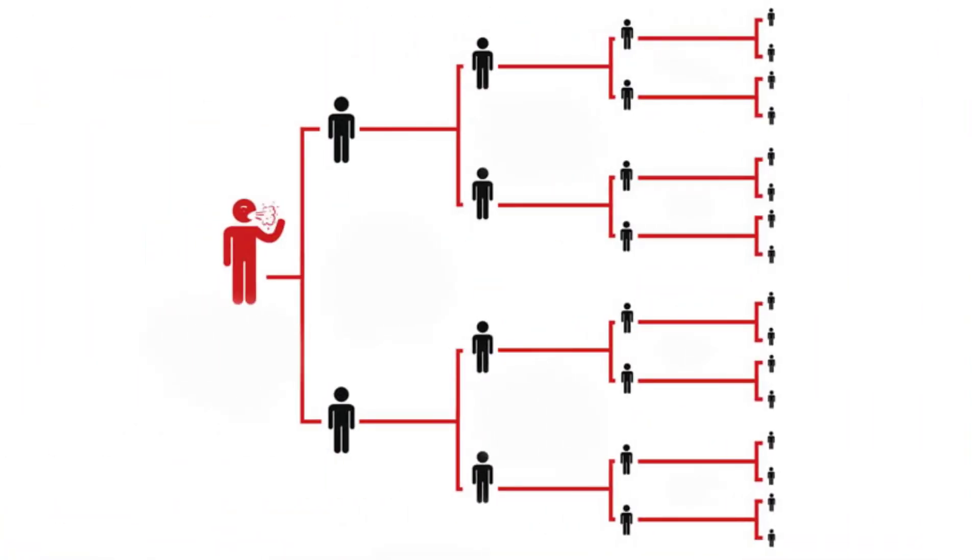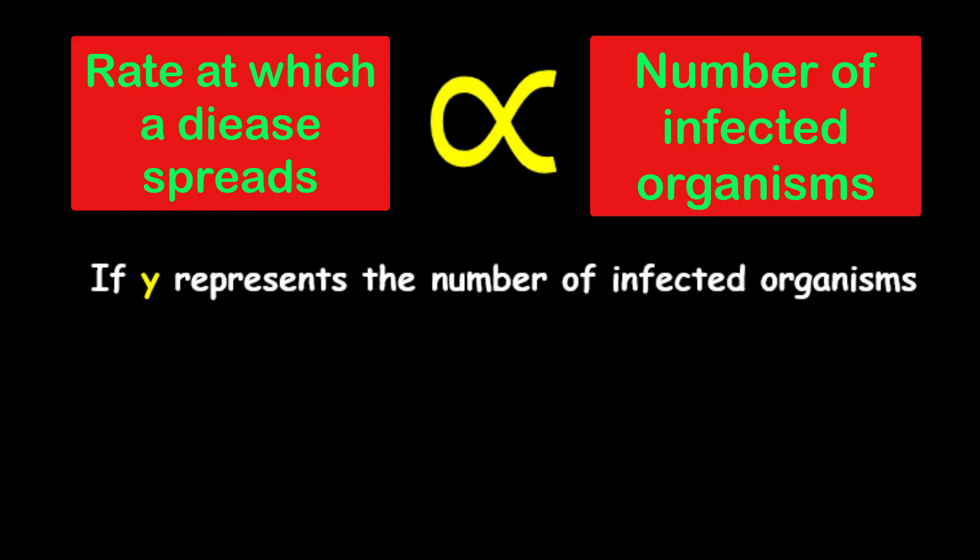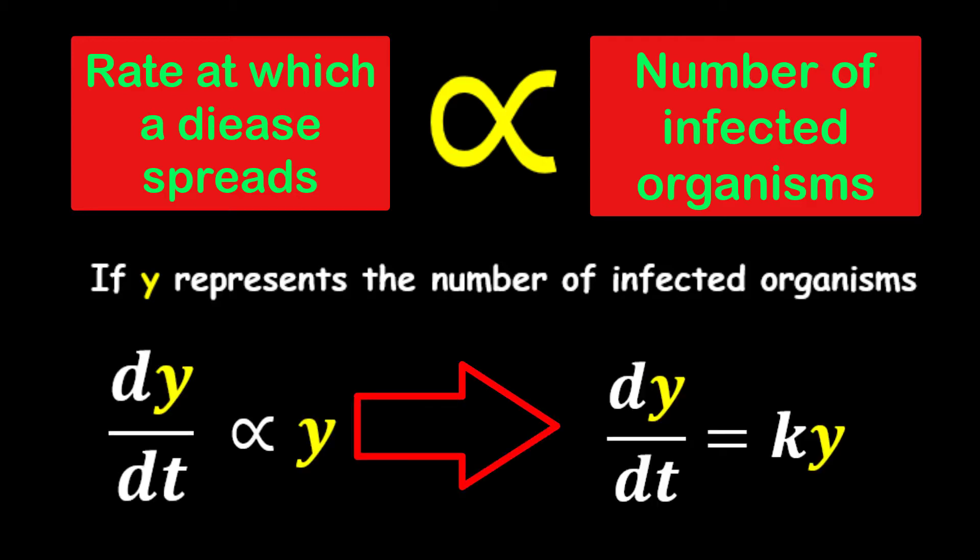This kind of makes sense because think about it — if you have a population that is infected, then the more organisms that are infected, the faster they will spread the disease, so it will spread even faster. Now if we let Y be the number of organisms that are infected within this population, then we can represent this entire situation as a differential equation, where K is a constant of proportionality. We just created a differential equation to model the behavior with which a disease spreads through a population.